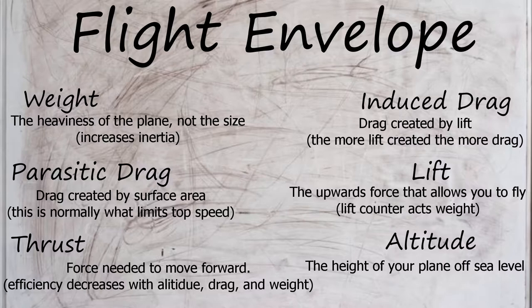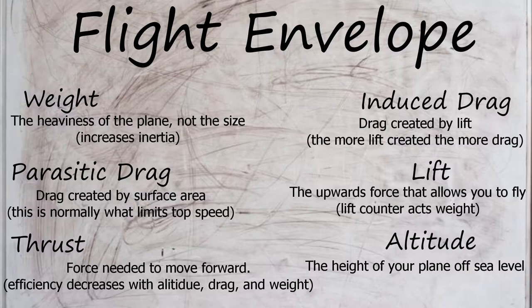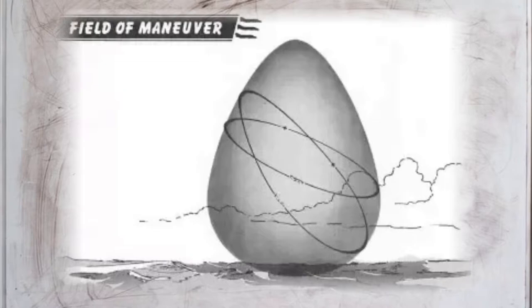During the series I will give more information on terms in writing — pause the video if you wish to read them. Every plane in a constant turn will resemble this diagram; this is called the field of maneuver. A fun fact: in John Boyd's aerial attack study, this diagram is upside down without any explanation, as shown right now on screen.